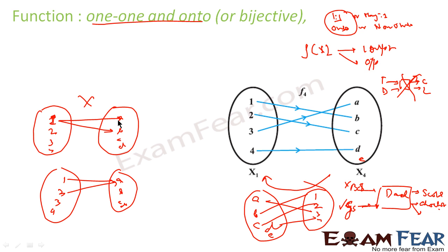Logically, if it is a good score, you cannot get both chocolates and scolding. But if a good score gives chocolates and an average score also gives chocolates, and a bad score gives scolding — that is possible. Two different inputs giving the same output is allowed. The moment you have a many-to-one function and you try to invert it, that inverted relation will not be a function at all.